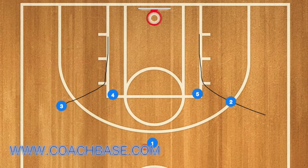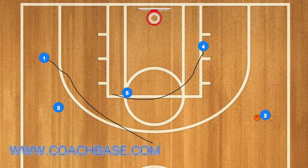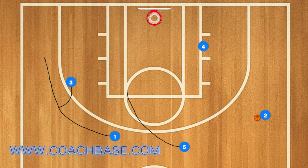First, player three and two is going to use four and five as a screen, and then five will set a screen for four while one passes to player two. One will then cut to the left wing while four will use five as a screen and cut towards the right low post.